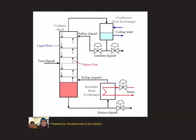This is the schematic diagram of a continuous distillation column. In this diagram, you can see the feed inlet and the product outlets. You have two product outlets: one at the top of the column and one at the bottom of the column.